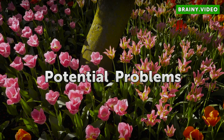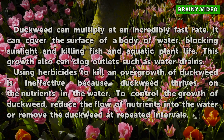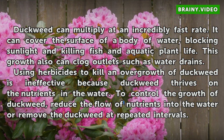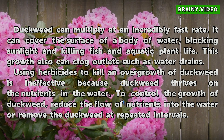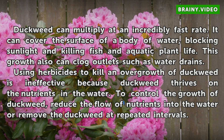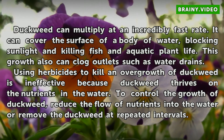Potential Problems. Duckweed can multiply at an incredibly fast rate. It can cover the surface of a body of water, blocking sunlight and killing fish and aquatic plant life. This growth also can clog outlets such as water drains. Using herbicides to kill an overgrowth of duckweed is ineffective because duckweed thrives on the nutrients in the water. To control the growth of duckweed, reduce the flow of nutrients into the water or remove the duckweed at repeated intervals.